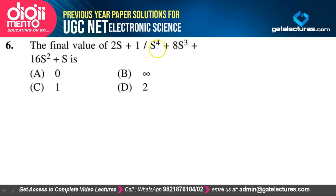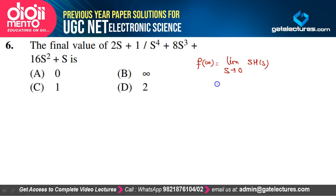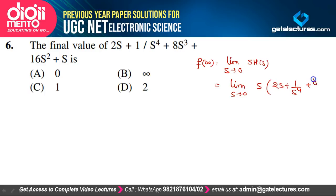The final value of (2s+1)/(s⁴ + 8s³ + 16s² + s). By the final value theorem, f(∞) = lim(s→0) s·H(s), applicable when all poles are on the left side of the s-plane or at most one pole at the origin. Applying it gives answer 0 by L'Hôpital's rule. Answer A is correct.